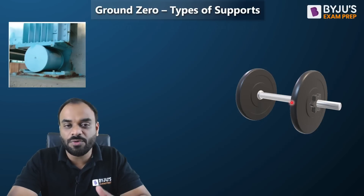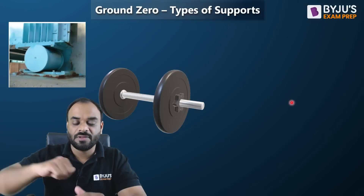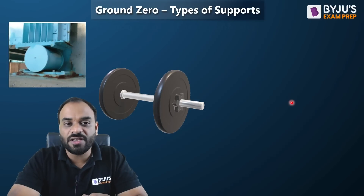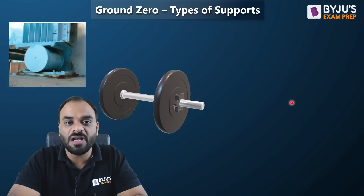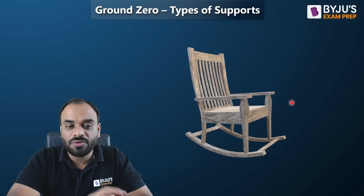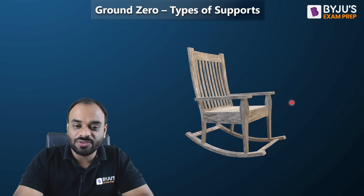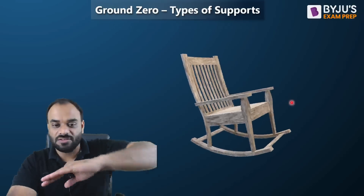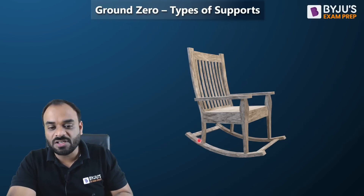Looking at examples: a roller support is illustrated here. Consider a dumbbell — it can move in the vertical direction only and cannot move laterally, so it has one vertical reaction and allows displacement in the horizontal direction. For the rocker support, consider a rocking chair seen in movies — it can swing back and forth but has limited horizontal displacement due to its curved shape, which is why it is called a rocker.